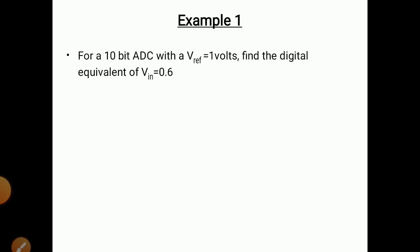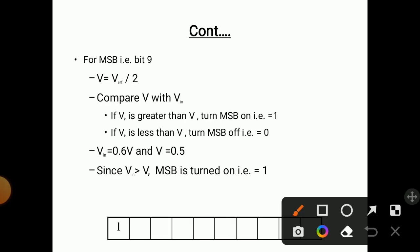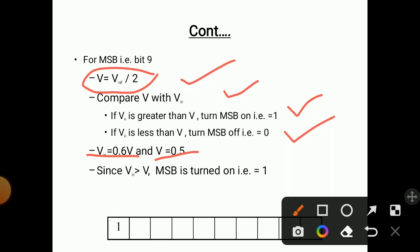Example: For a 10-bit ADC with a V reference of 1 volt, find the digital equivalent of V input = 0.6 V. First, take V = V_reference / 2 = 0.5 V. Compare V with V input: since V input (0.6 V) is greater than V (0.5 V), turn MSB = 1. Rule: when V input is greater than V, turn MSB = 1. So our first bit is 1.